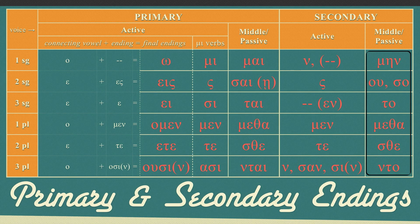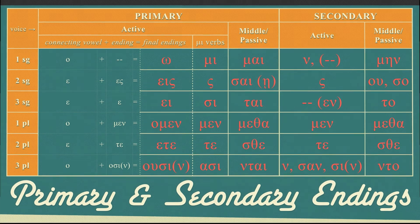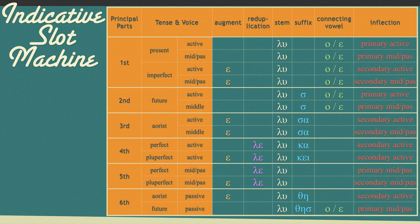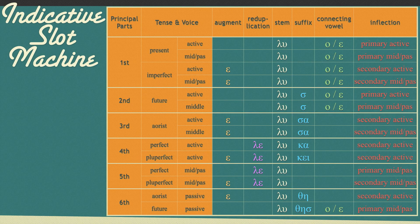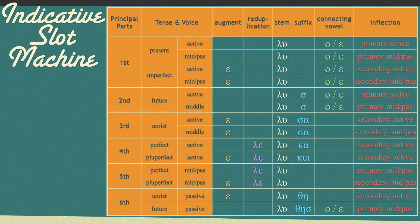Now that you've seen the endings, let's go to a detailed view of the slot machine. Slot 1, the epsilon augment. Slot 2, the duplication. Slot 3, the verb stem. Slot 4, the suffix. Slot 5, the connecting vowel. Slot 6, verb endings.